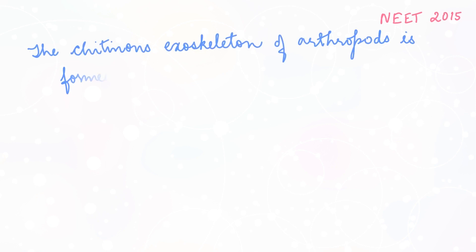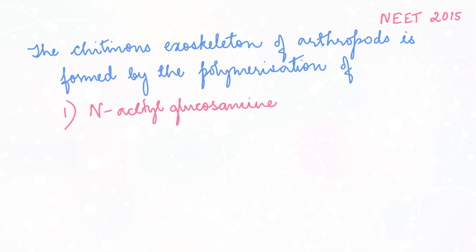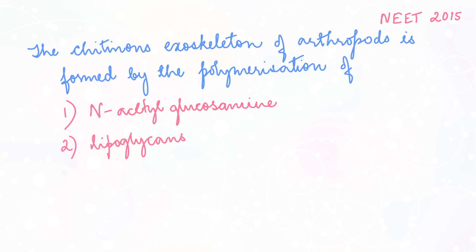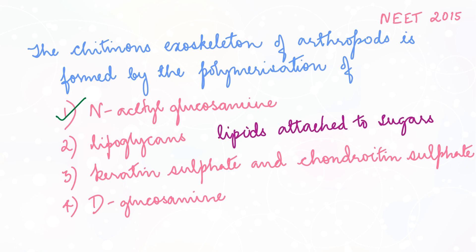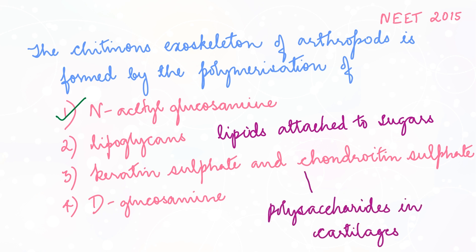Question from NEET 2015: the chitinous exoskeleton of arthropods is formed by the polymerization of — N-acetyl glucosamine, lipoglycans, keratin sulfate and chondroitin sulfate, or D-glucosamine. Chitin is a polymer of N-acetyl glucosamine. Lipoglycans are lipids attached to sugars. Keratin sulfate and chondroitin sulfate are polysaccharides present in cartilage. D-glucosamine is an amino group attached to a glucose molecule. The answer is N-acetyl glucosamine.